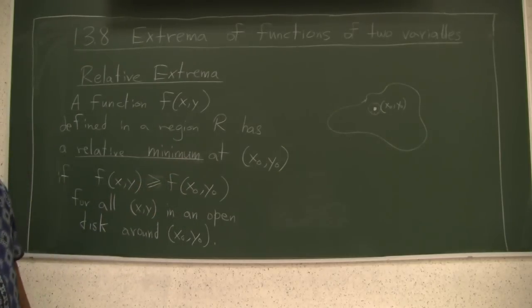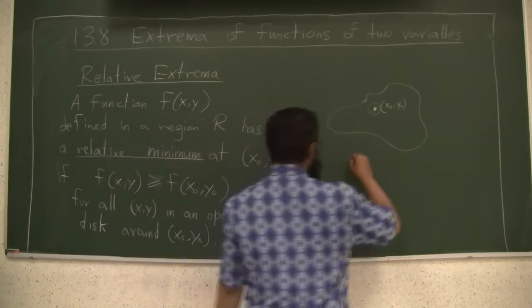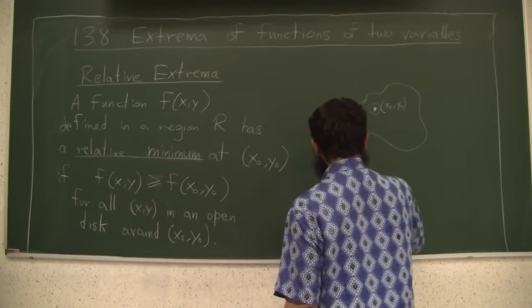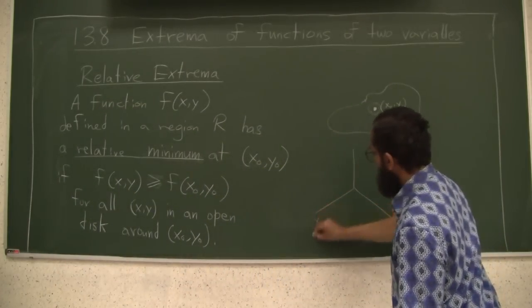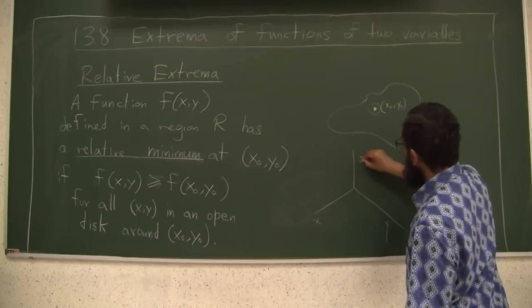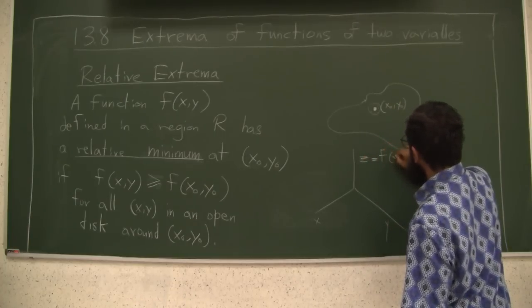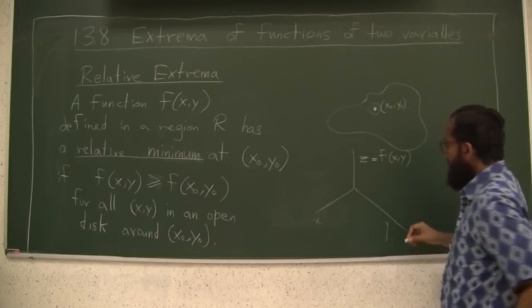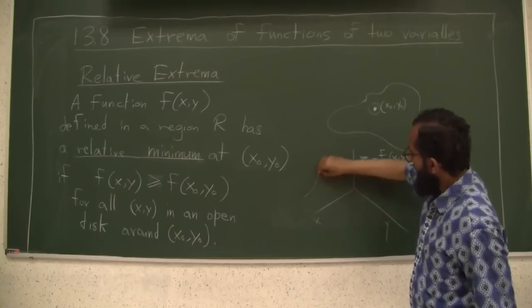And so the idea is basically, let's imagine a 2D function. This is the graph of 2D function where this is the x-axis, y-axis, z equal to f of xy. And you might have a function that has this shape.